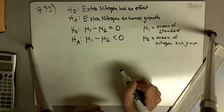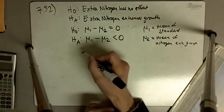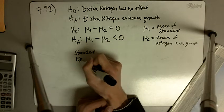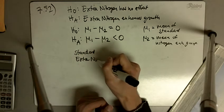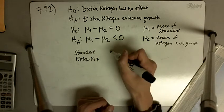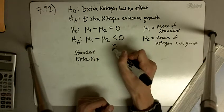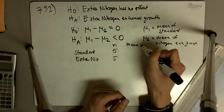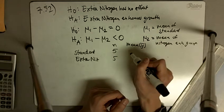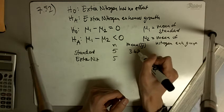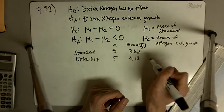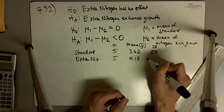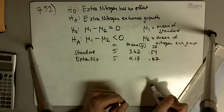This is what our table is. We have the standard, extra nitrogen, we had the counts, five in each group, the mean or y bars are 3.62 and 4.17, the standard deviation, or our s, is going to be 0.54, and over here 0.67.